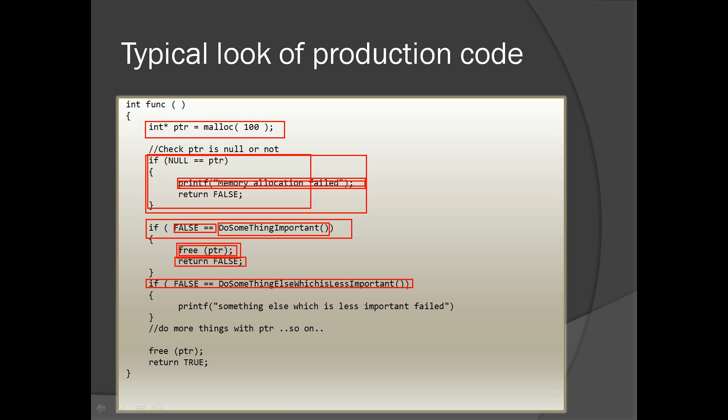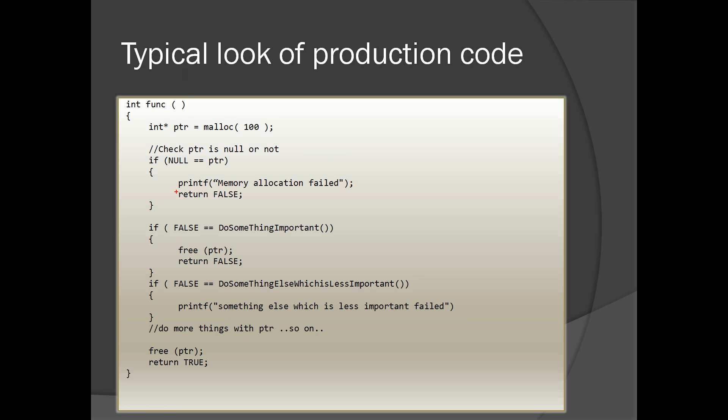Next, what I am doing is calling a function which is less important. If it fails, all I am doing is just printing that particular functionality failed. It is not a fatal problem for me in this particular program. I am continuing with the program, continuing with the function. At the end, I am freeing this particular buffer which I have allocated here and returning true. If I go here or here, I will never reach here. This is a typical look of production code.